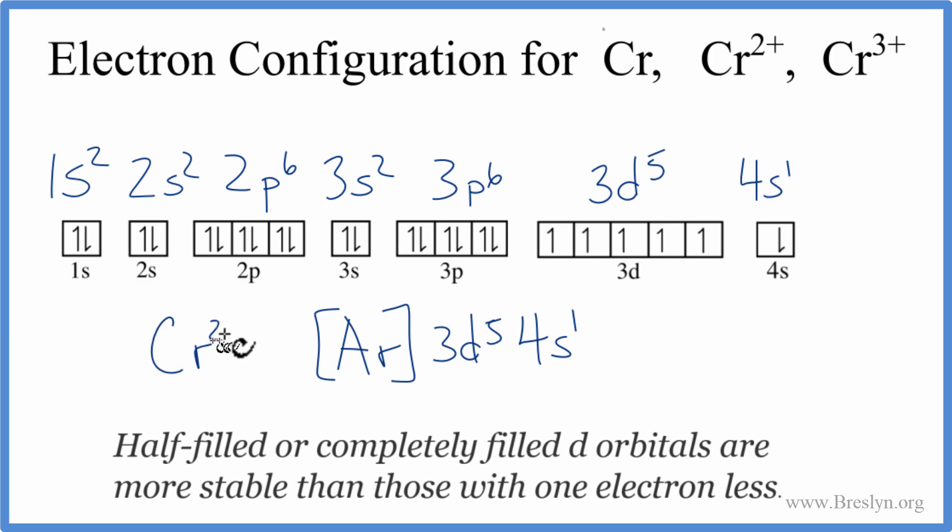If we wanted to do Cr2+, we just remove two electrons. So let's remove this one. Often you'll see a zero written there when you remove it. And let's take one from the 3d5, which becomes 3d4. That's chromium 2+.